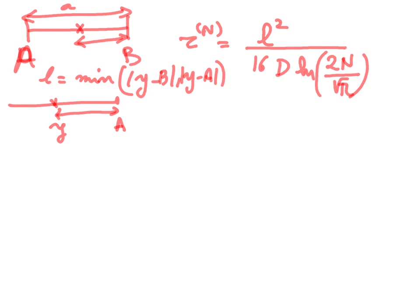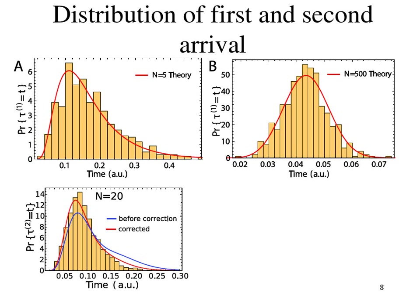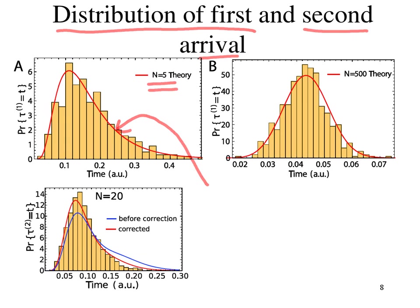I will give references at the end. Before that, let me finish with what we discussed in the previous class about extreme statistics — the distribution of the first and second arrival. We ran simulations and compared with the theory, showing very good approximation. We also looked at the dependency with respect to the number of initial particles: here we have 5, here 500. You can see how this leads to a shift in the normalized time scale proportional to log(n) and not n itself.